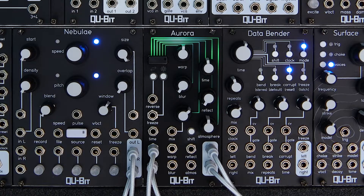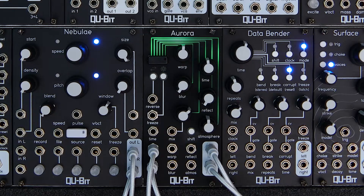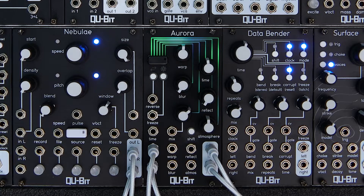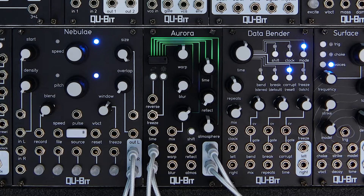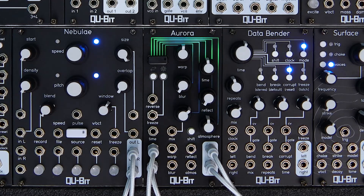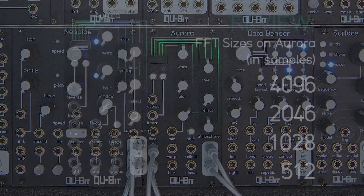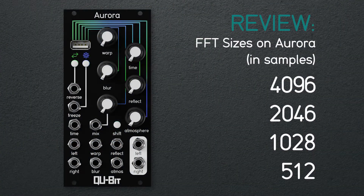Let's take a listen to the spectral blurring on the lowest setting and then compare it with the highest. Having access to multiple spectral resolutions really opens up Aurora as a sound design tool, and we recommend trying all sorts of sound sources at each setting to hear the differences.